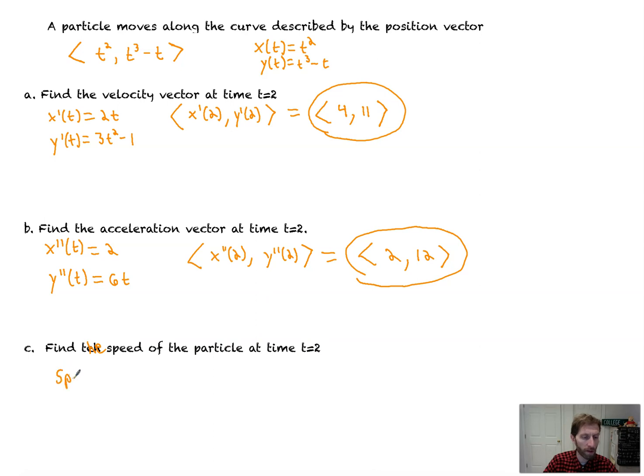And this says find the speed of the particle at time t equals 2. That's knowing your formula. So speed is equal to the square root of x prime of 2 squared plus y prime of 2 squared. And that ends up equaling out to, well, x prime of 2 we already have. That's 4 squared plus y prime of 2 squared is 11 squared. So we already have those two values. And you could leave it like that on the BC exam, or we could simplify it. That's going to be the square root of 16 plus 121 is the square root of 137. We don't have units, so you do not need to provide units. Not bad, right? I didn't think so either.